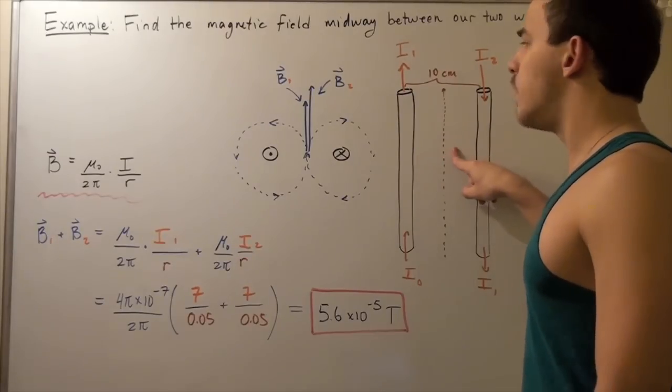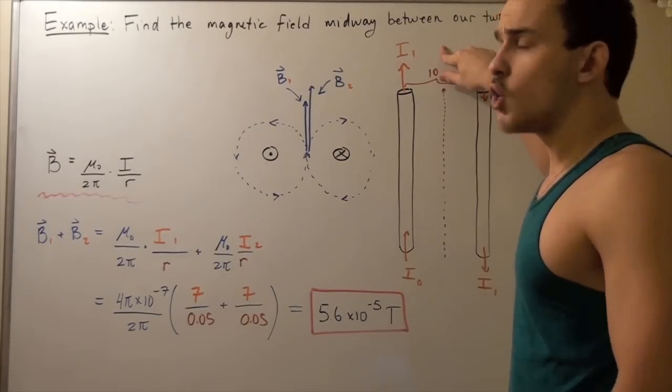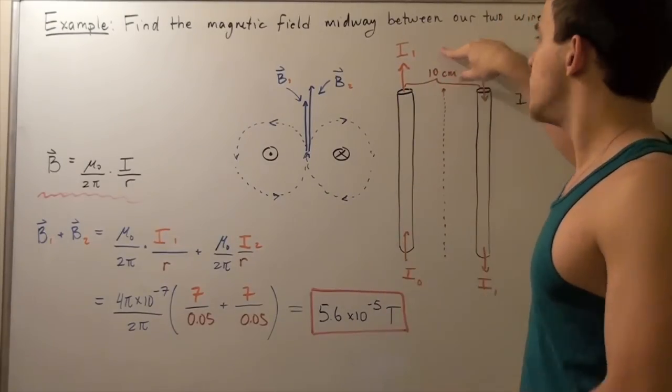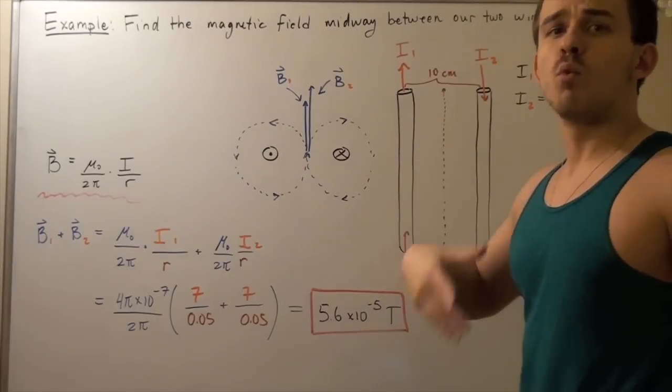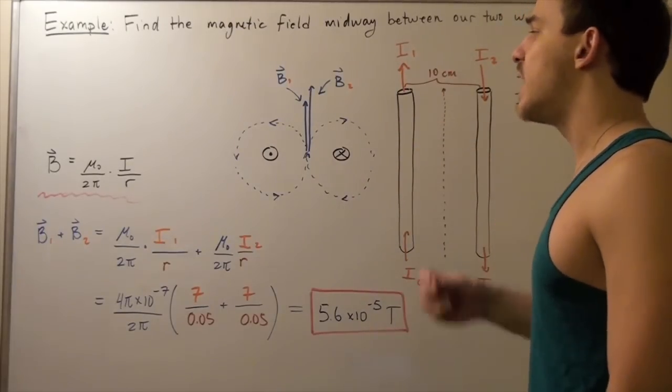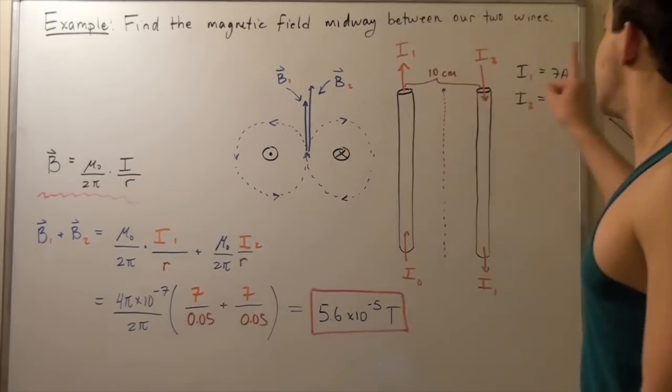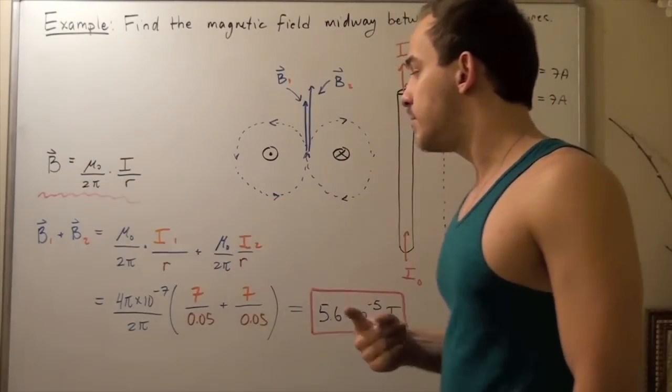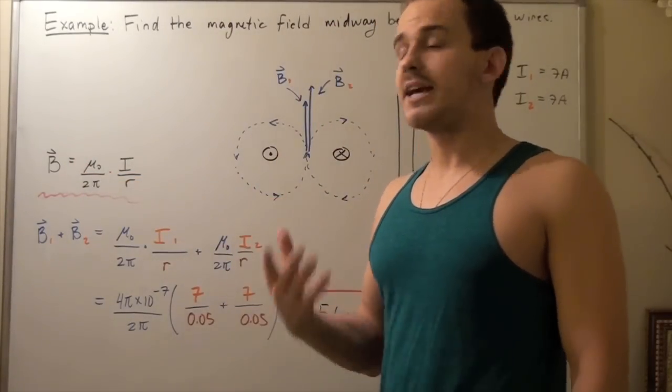So the distance in both cases is five centimeters, which by the way, we have to first convert to meters. So we take five and divide by 100, we get 0.05 meters. Now our I for both cases is 7A. And our μ₀ is simply 4π times 10 to the negative 7.